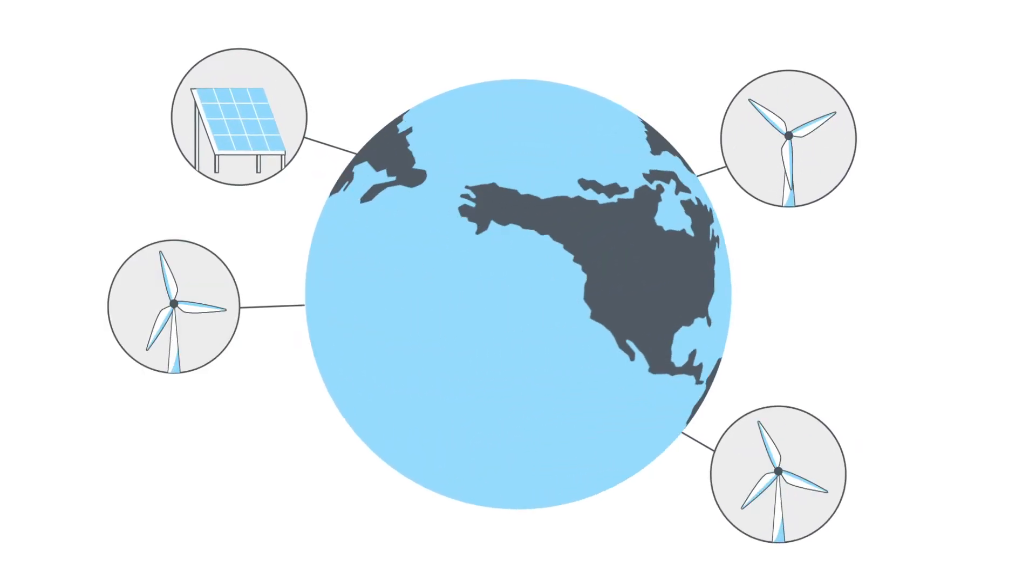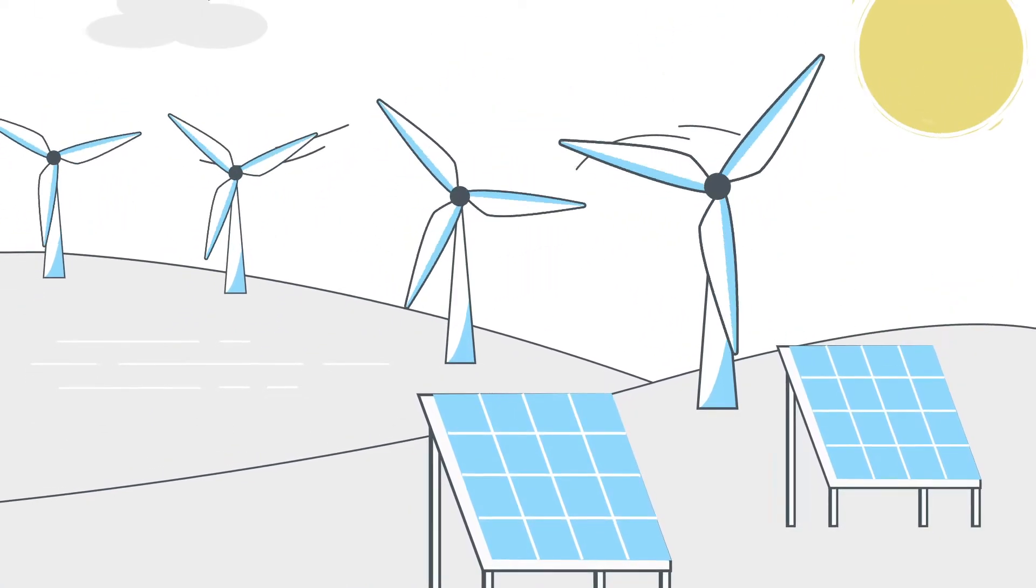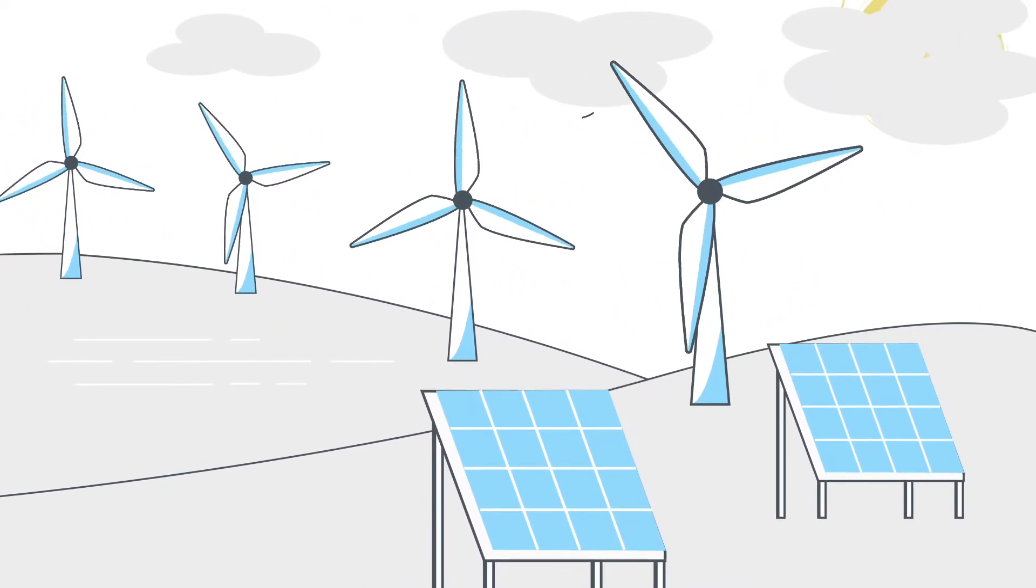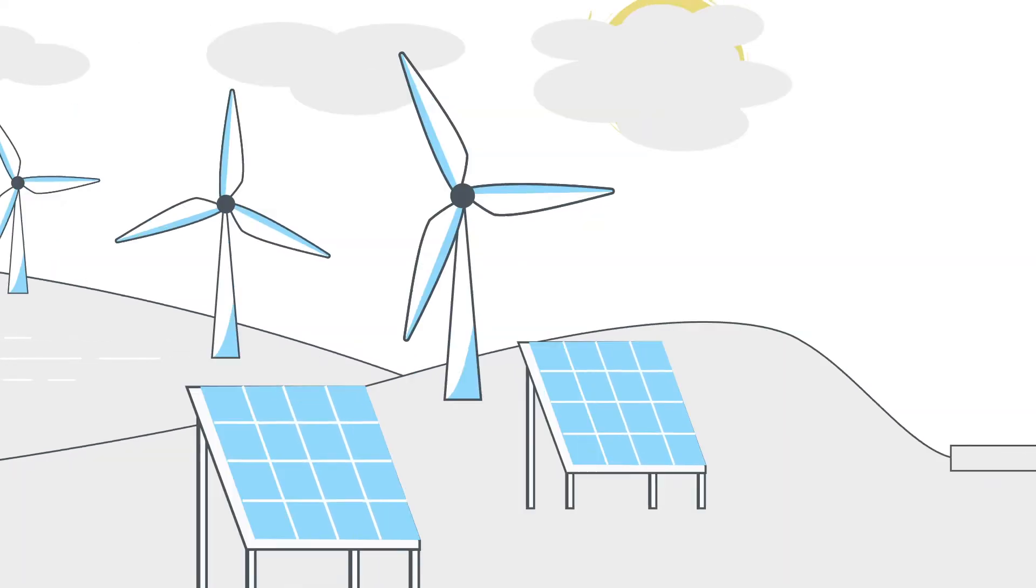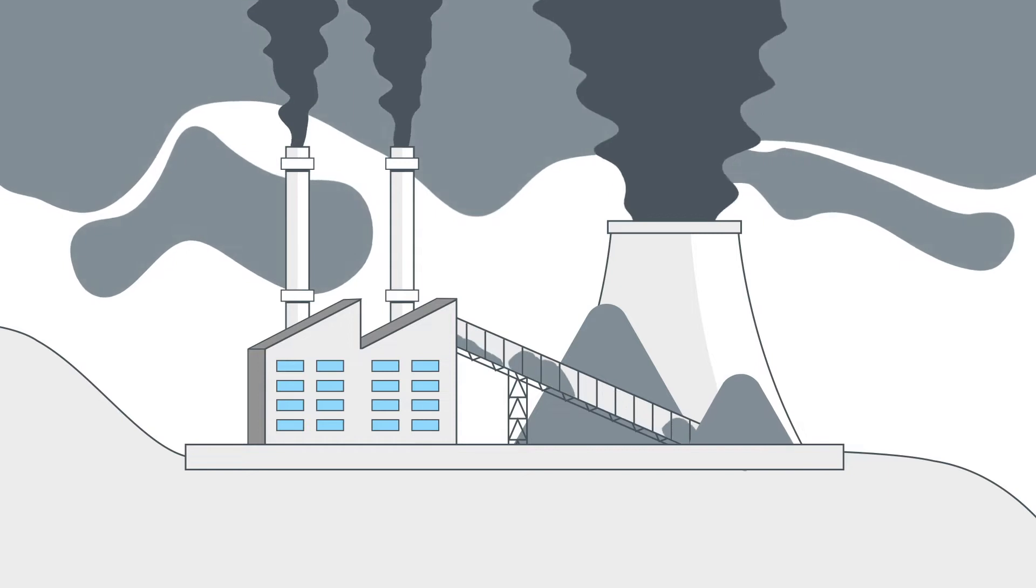The world is making progress, adding renewable resources like wind and solar to the grid. But these resources can't produce electricity if the sun isn't shining or the wind isn't blowing. When that happens, utilities have to rely on fossil fuels to supply the grid with power.